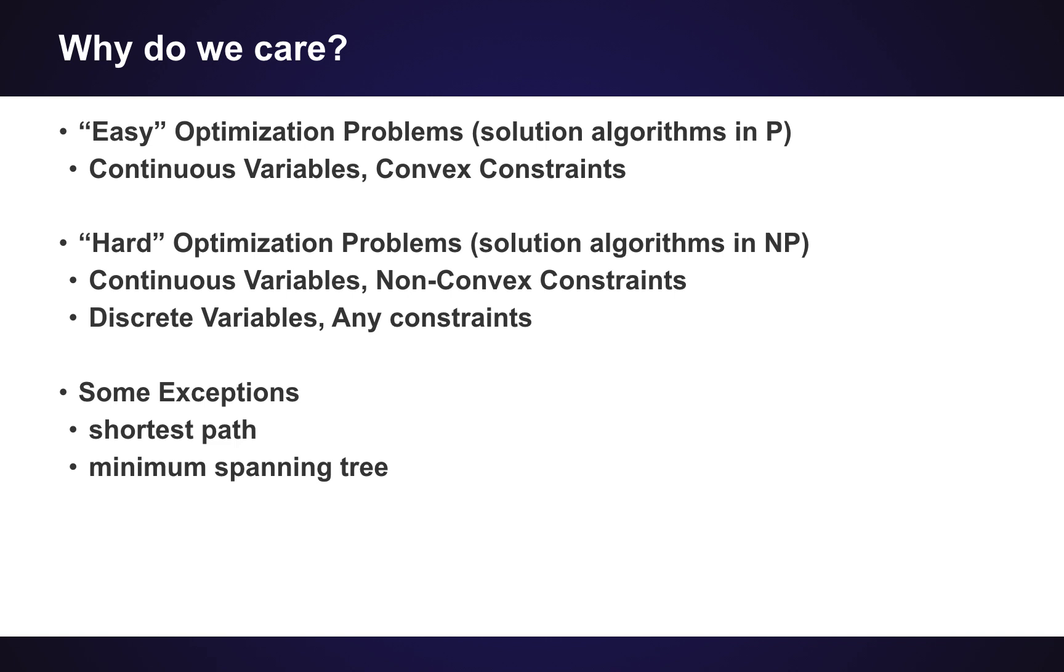Okay, so just to understand this better, if I have a problem with continuous variables which has convex constraints, I know that I am in P and I should be able to find an efficient solution algorithm. Whereas if I have a problem which has continuous variables but non-convex constraints, I may or may not have an efficient solution algorithm. So it could be that I am still in P, but it could also be that it is an NP-hard problem.